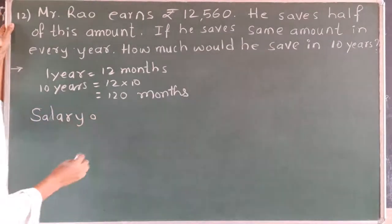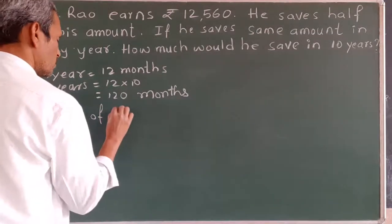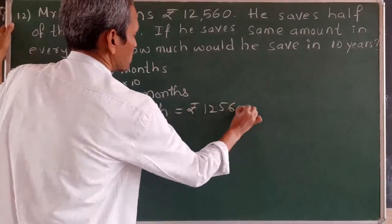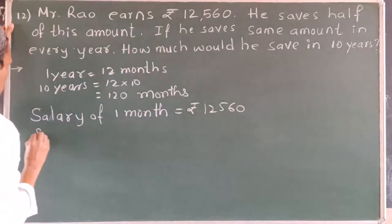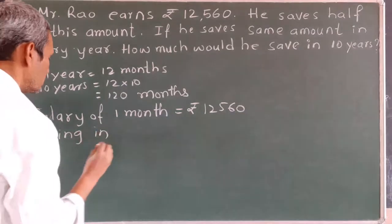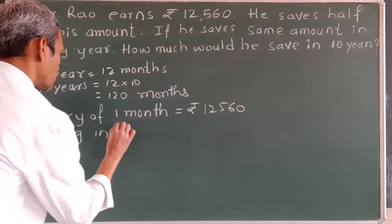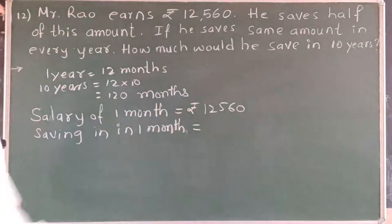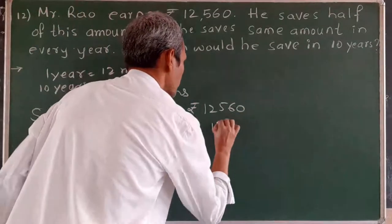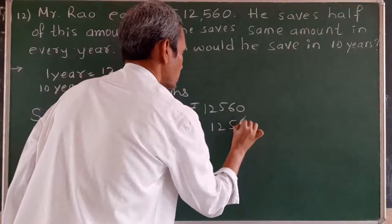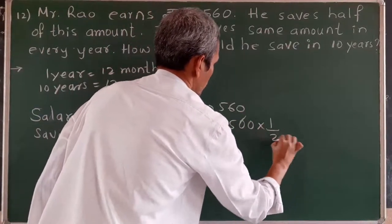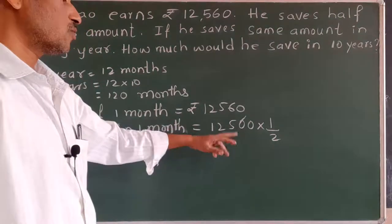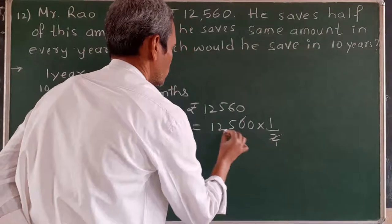The earnings of 1 month is rupees 12,560. Saving in 1 month: we should divide this by 2, that is 12,560 multiplied by 1/2, or we can divide it by 2. We will make this into 2 parts. If we divide by 2, we will get half of it.